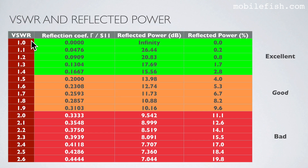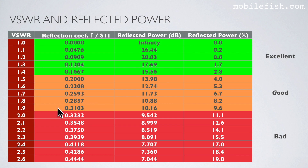In this table you see the relation between VSWR values and the corresponding reflection coefficient, also known as S11, the reflected power in decibels, and the reflected power in percentage. A VSWR between 1.0 and 1.4 is an excellent, well-tuned antenna. A VSWR between 1.5 and 1.9 is considered good. A VSWR of 2.0 and above is a bad, poorly-tuned antenna — for instance, a VSWR of 2.0 means 11.1% of the input power is reflected back, while a VSWR of 1.4 means only 2.8% is reflected back.